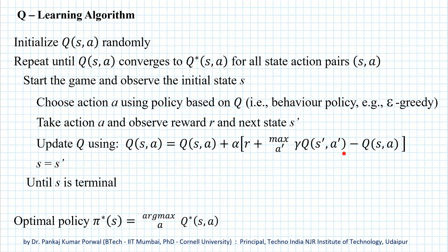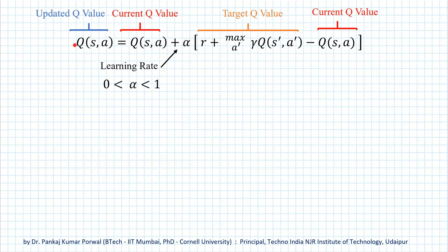This is a very important equation, so let's look at it in more detail. The Q-value on the left-hand side of the equation is the updated Q-value for state-action pair S-A after taking action A. This Q-value is the current Q-value for state-action pair S-A before taking action A. This other term is also a current Q-value, and this is the target Q-value for state-action pair S-A after taking action A.